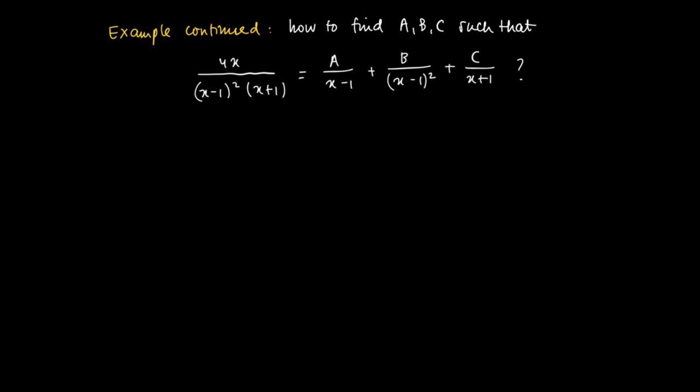Well, again, the procedure is to work backwards. So we start from the right-hand side, where a, b, c are present, and we try to bring it back to a rational function with the denominator equal to (x-1)² times (x+1). So how can this be done?